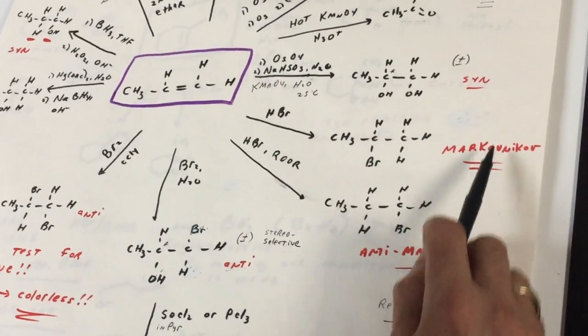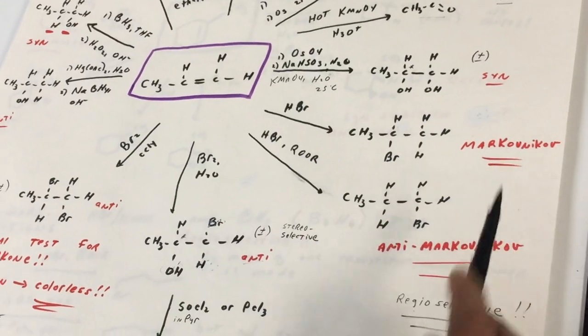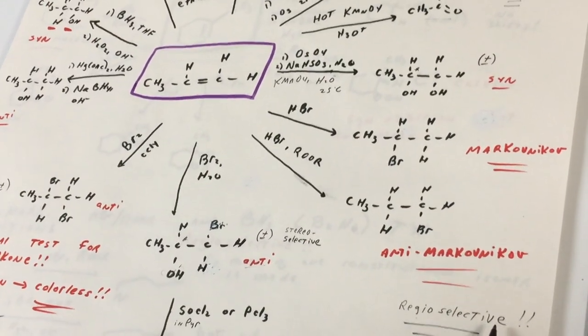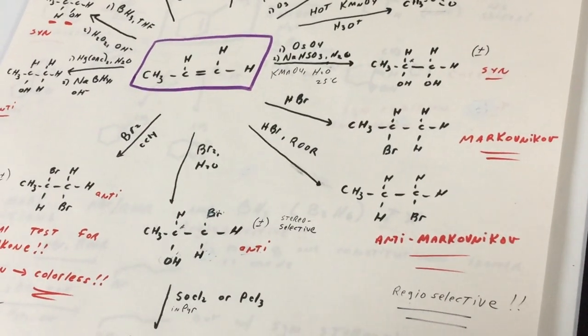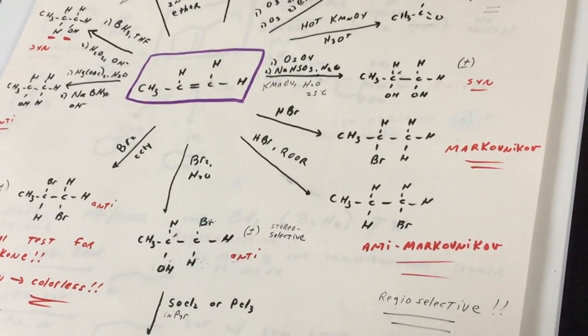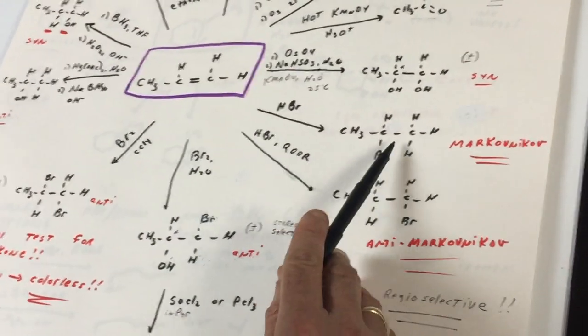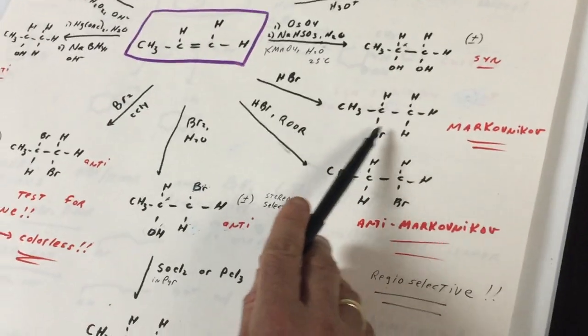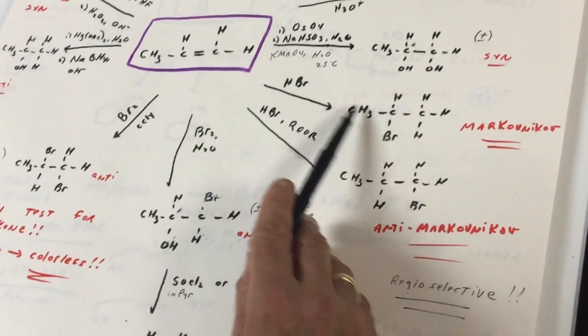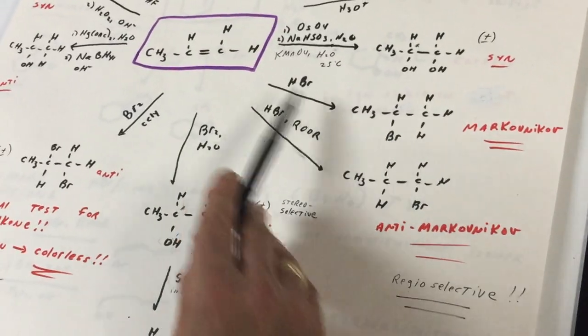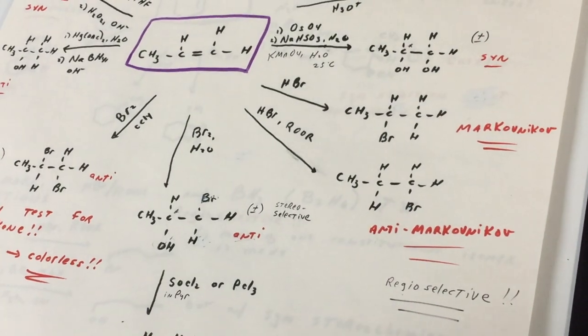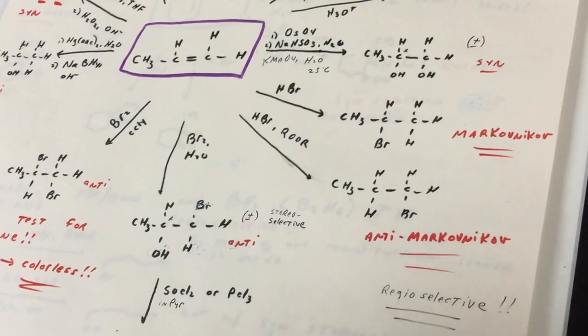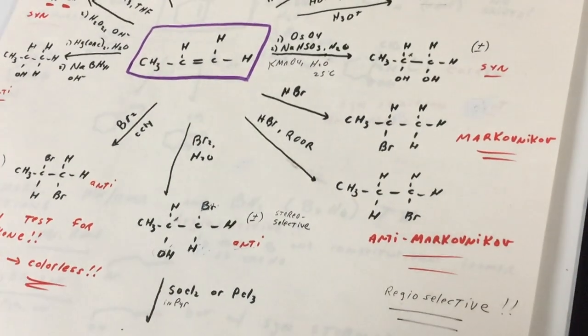These two reactions that we just did are what we call regioselective. Regioselective means that it produces one particular constitutional isomer as the major product. So for example, when we wanted to get the 2-bromo isomer, we use the Markovnikov addition. 1-bromo isomer, we use the anti-Markovnikov addition. And we call these regioselective reactions.